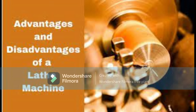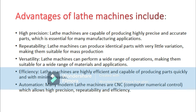Advantages of lathe machines include high precision — they are capable of producing highly precise and accurate parts essential for many manufacturing applications. They offer repeatability, producing identical parts with very little variation, making them suitable for mass production. They are versatile, performing a wide range of operations across many materials. They are highly efficient, producing parts quickly with minimal waste. Many modern lathe machines are CNC, allowing for high precision, repeatability, and efficiency.